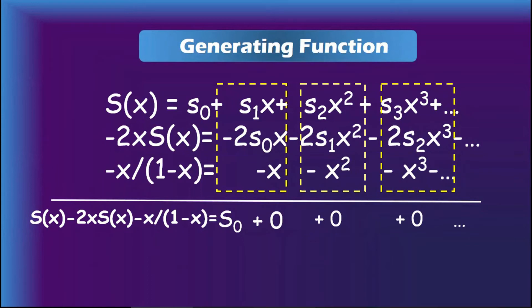Now to obtain the final function, we can apply multiply rule and addition rule. After addition, we will get S(x) - 2xS(x) - x/(1-x), which will be equal to s_0. We all know s_0 equals 0. So finally we can get the function S(x) equals x/(1-2x)(1-x).